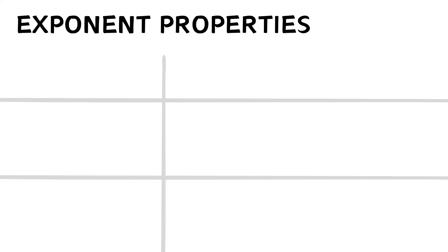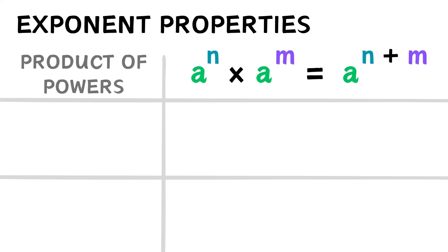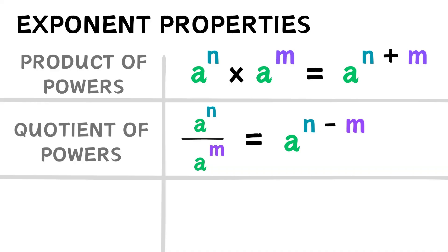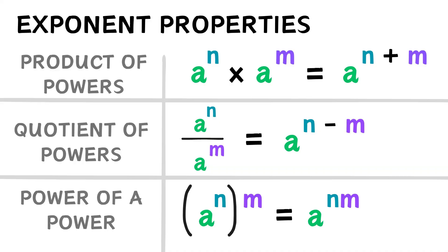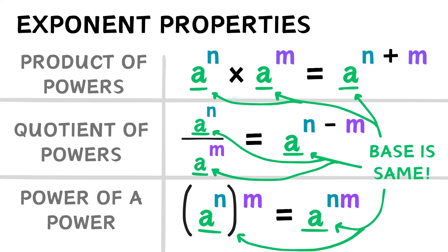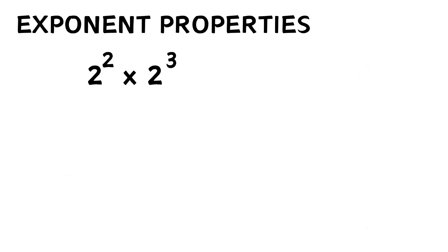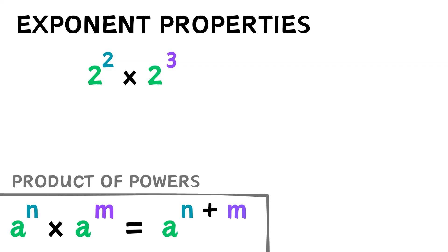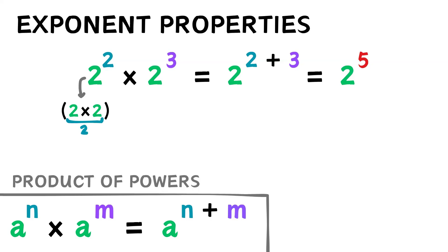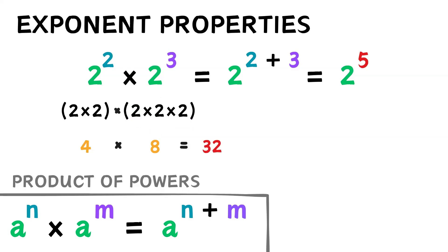Now there are some helpful properties that come with exponents: the product of powers property, the quotient of powers property, and the power of a power property. Notice that in each of these properties, the base is the same. If we multiply 2 to the power of 2 and 2 to the power of 3, the product of powers property says we should get 2 to the power of 5. Let's verify: 2 squared is 4, 2 cubed is 8, and 4 times 8 is 32 — which is indeed 2 to the fifth.